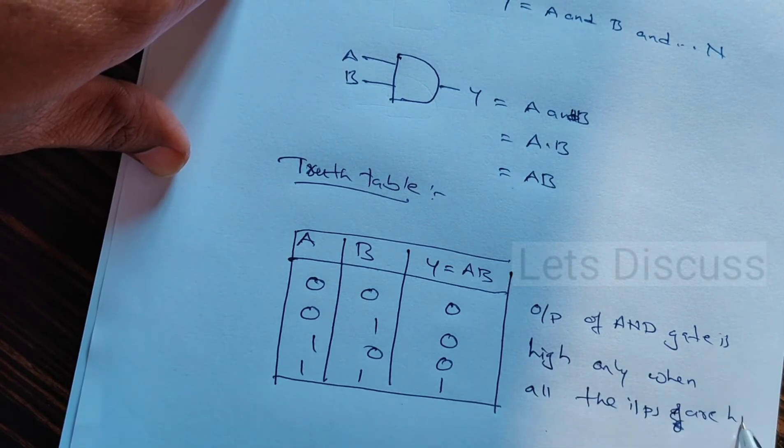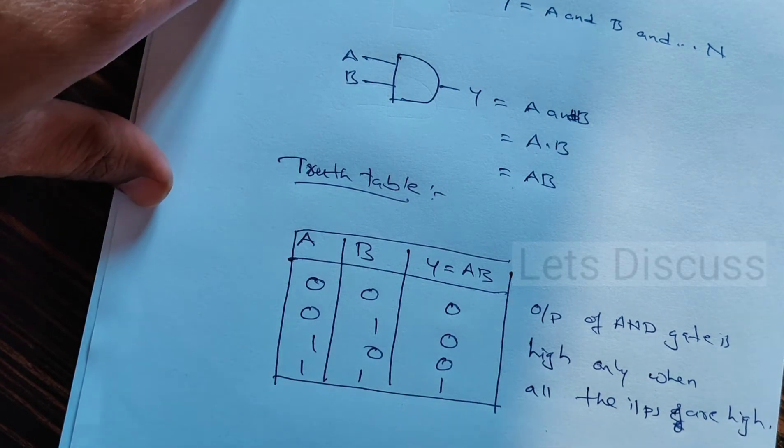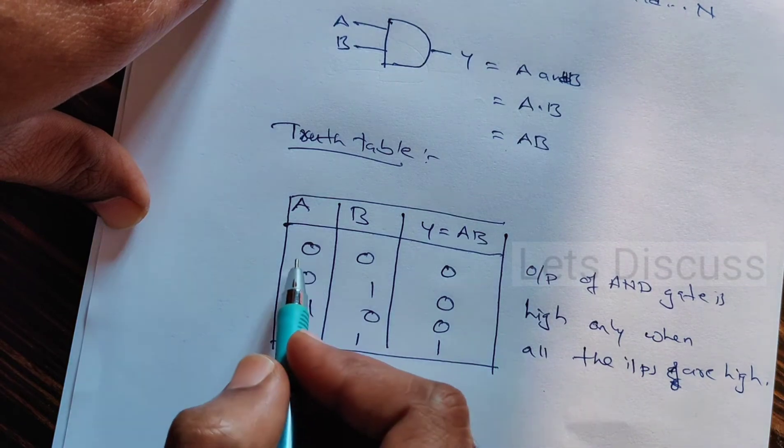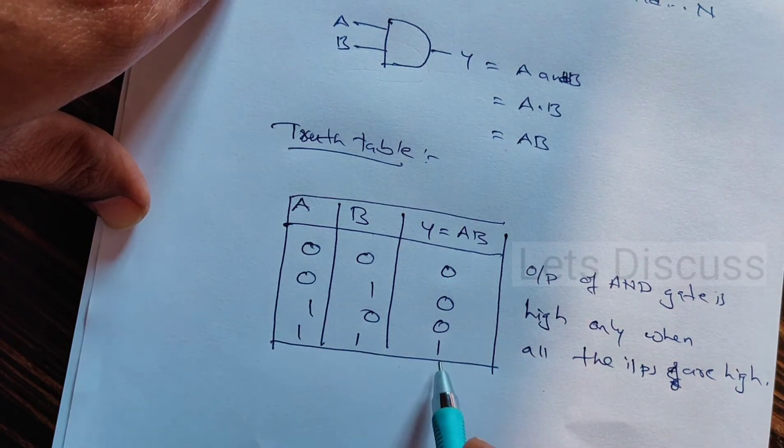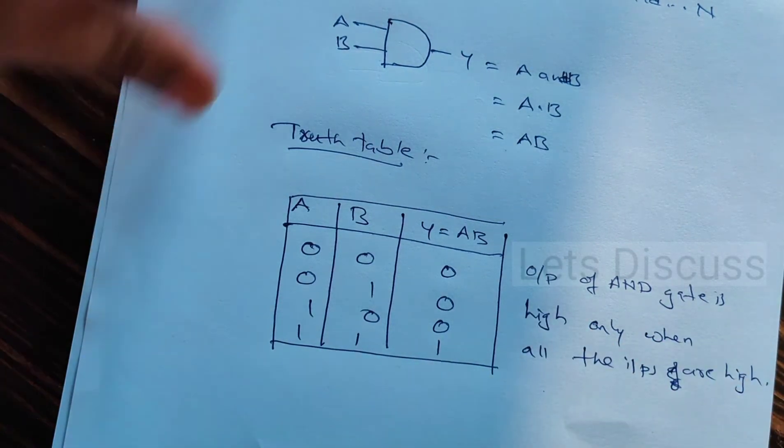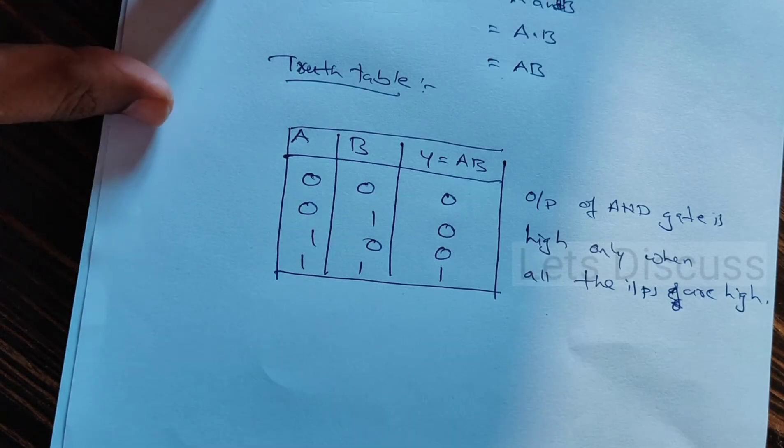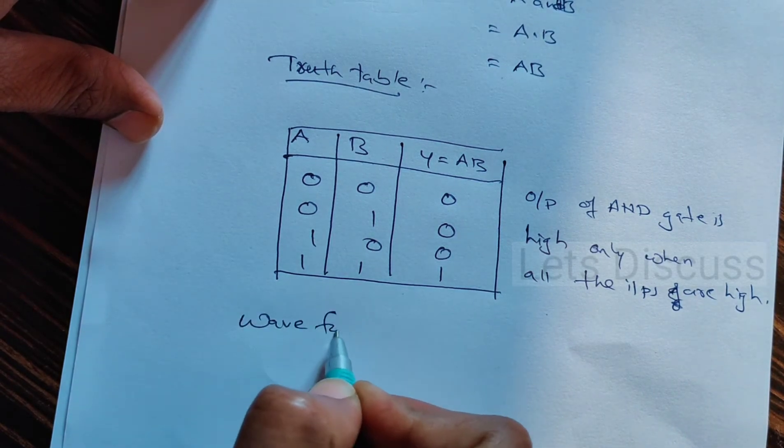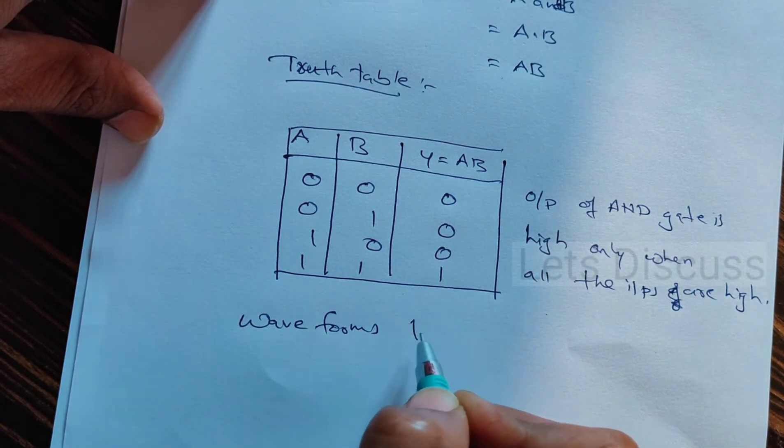You can check it here, when both inputs are 1 1, then only the output is 1. That's what I wrote here. Well, let us write the waveforms for this AND gate.